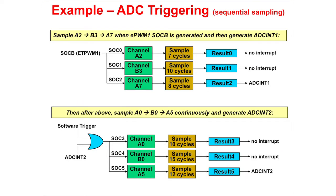The top example shows channels A2, B3, and A7 being converted with a trigger from EPWM1SOCB. After A7 is converted, ADCINT1 is generated. The bottom example extends this with channels A0, B0, and A5 being converted initially with a software trigger. After A5 is converted, ADCINT2 is generated, which is fed back as a trigger to start the process again.